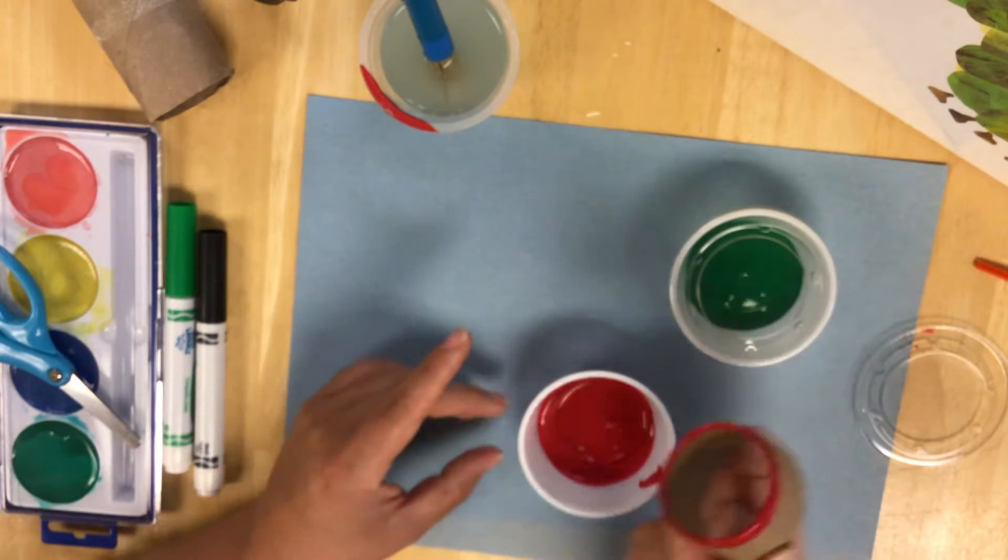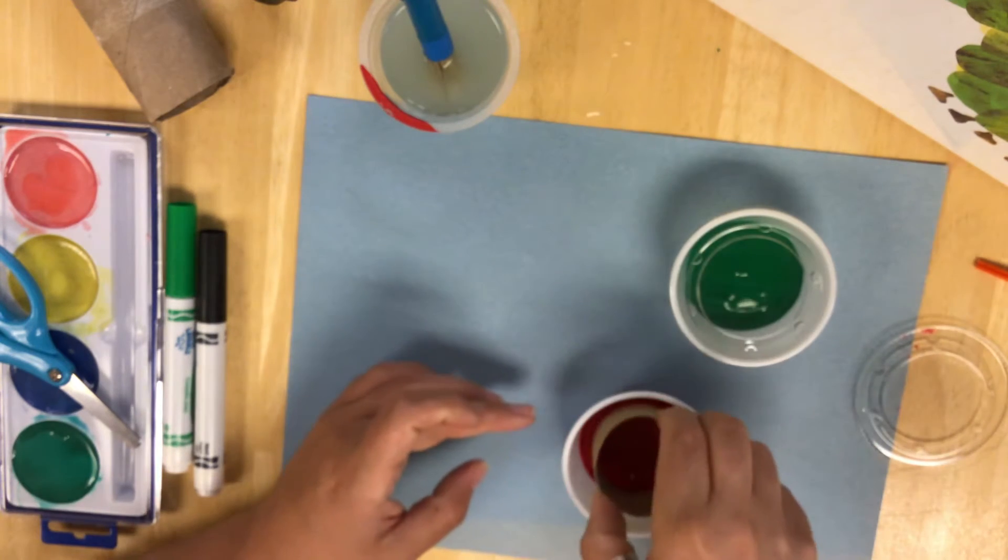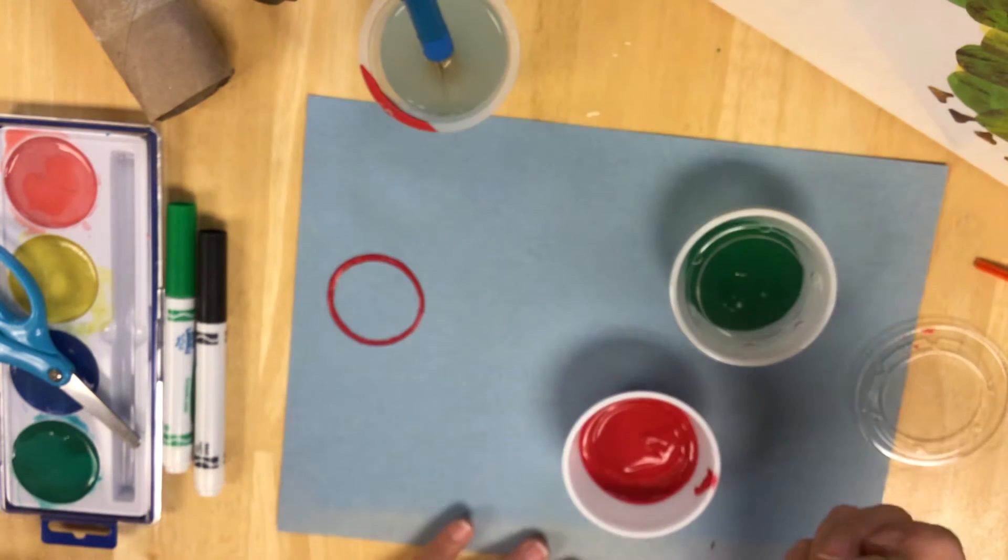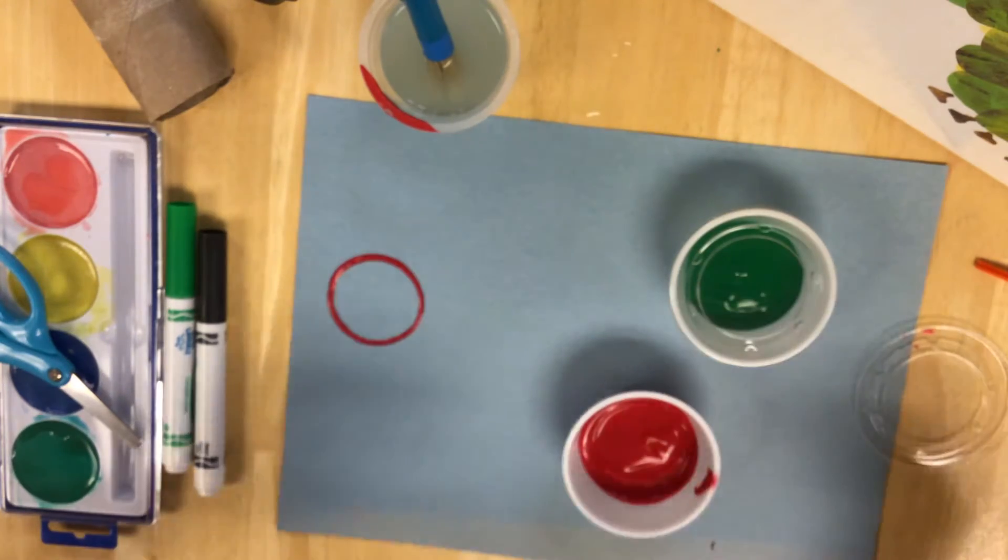So I'm gonna start out by dipping my toilet paper tube into the red and making a red ring for his head. There we go. There, see? Made a perfect circle. How cool is that?